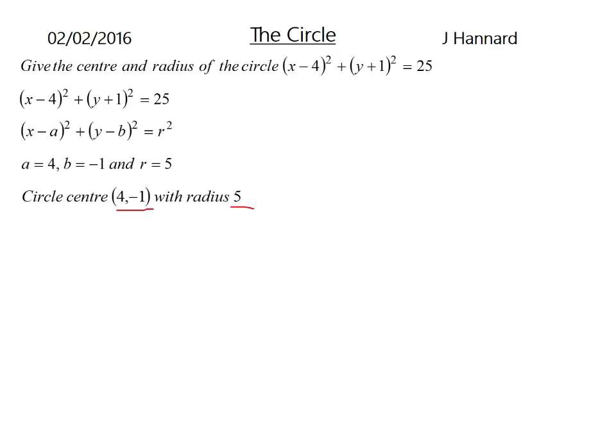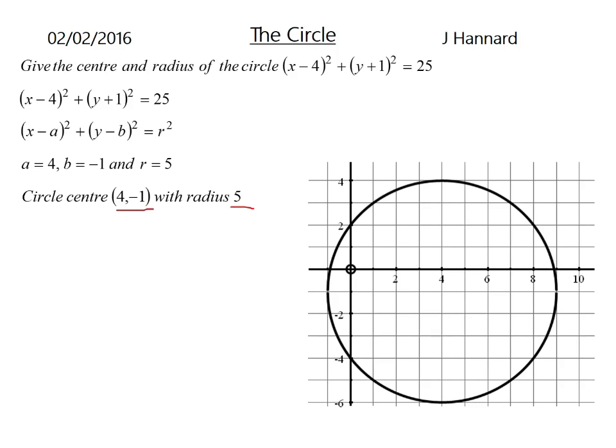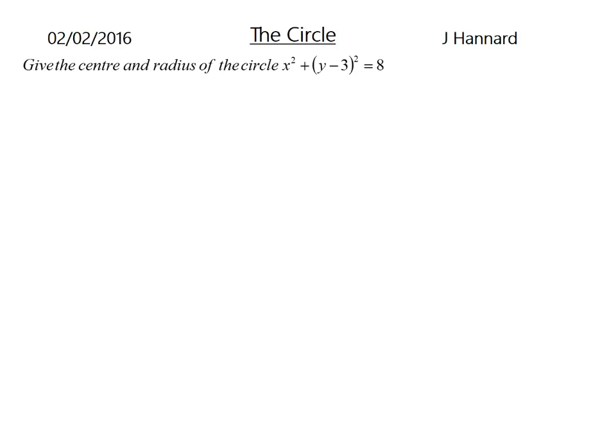So just think about that for a second. It should be fairly straightforward so far. So there's a picture of that circle. If we have a look, the centre is about there. So it's 4 out and 1 down, which is what we said before, which makes sense. And it should have a radius of 5. 1, 2, 3, 4, 5. It does, which is brilliant.